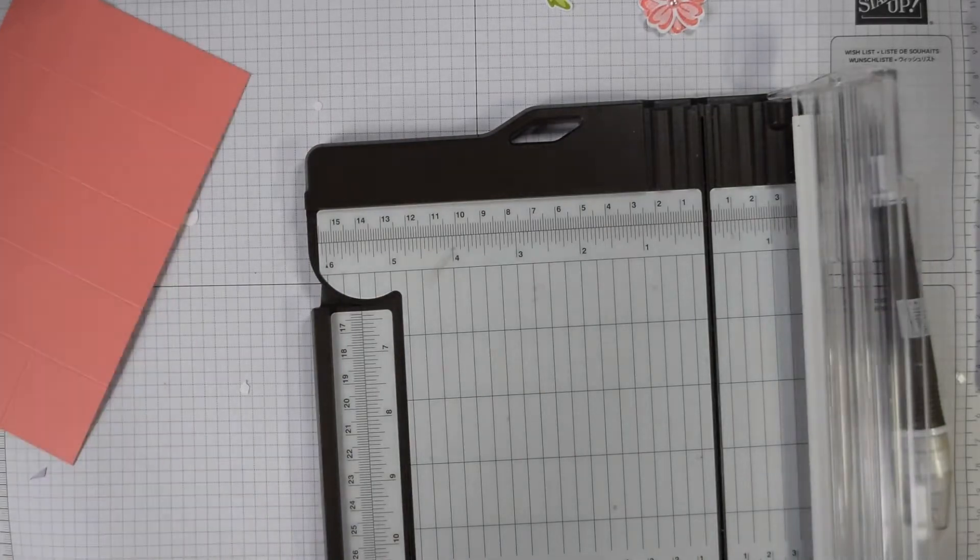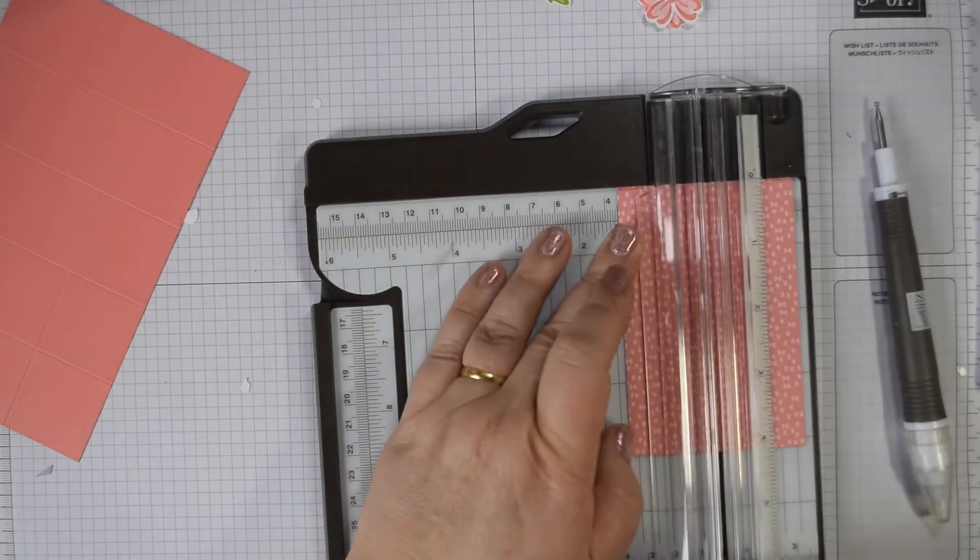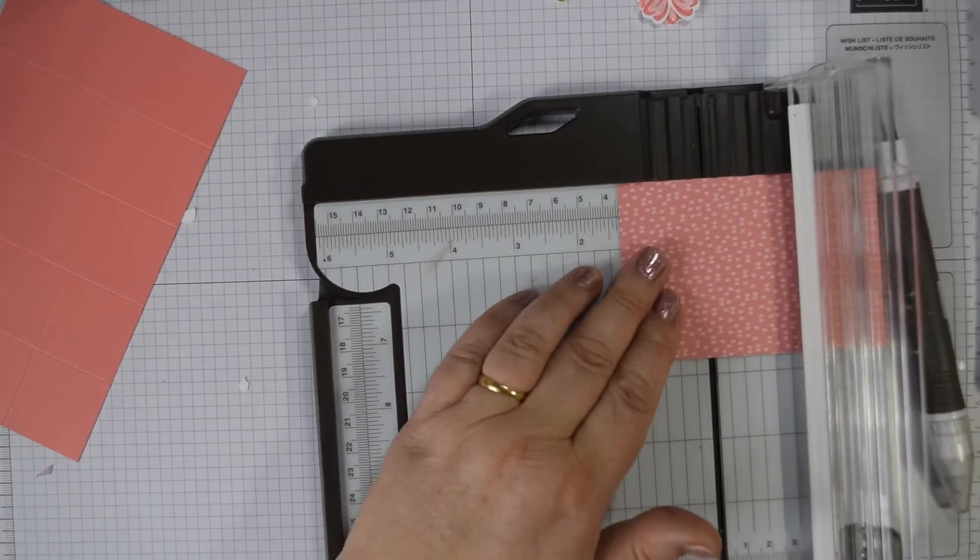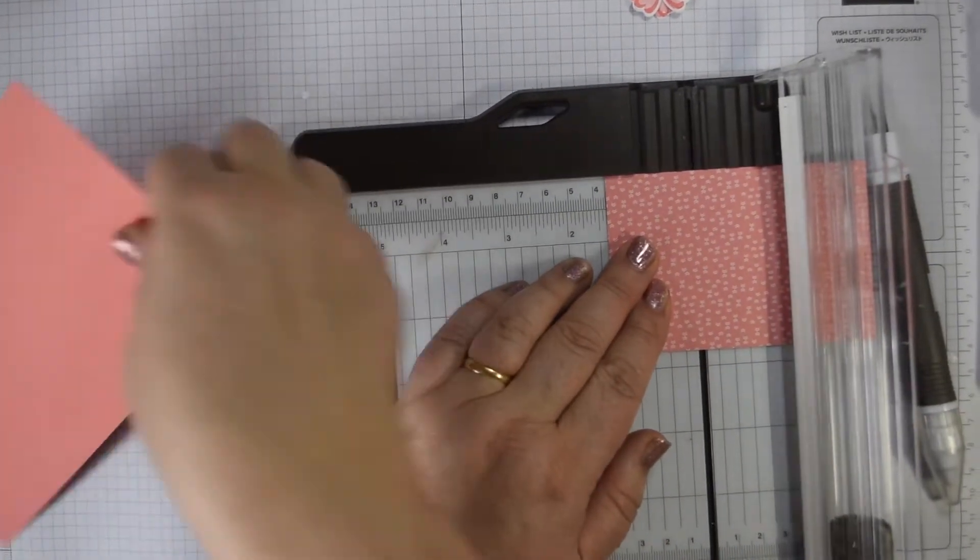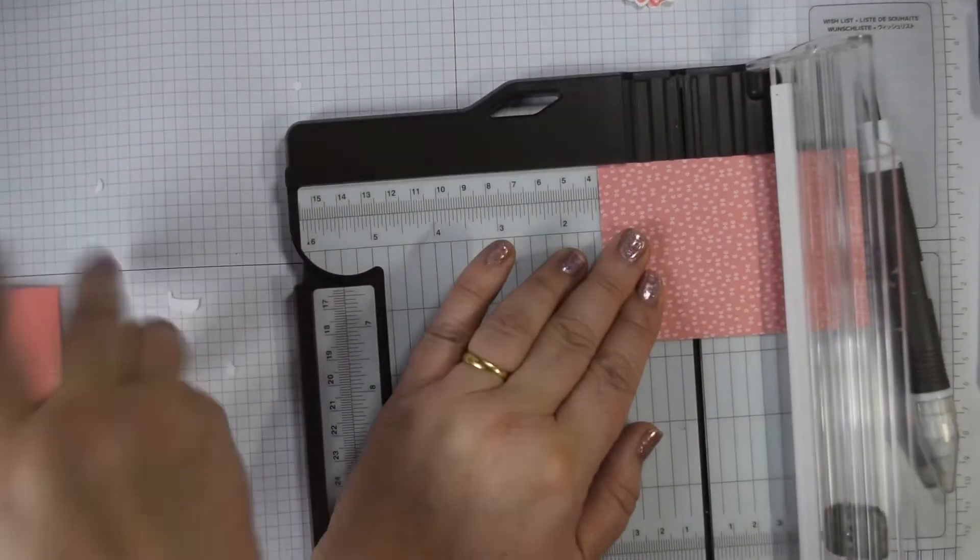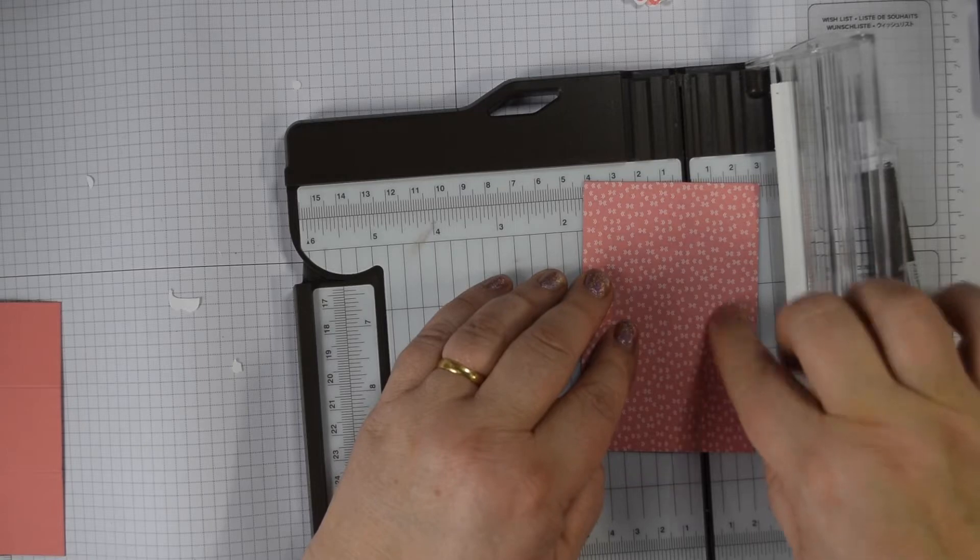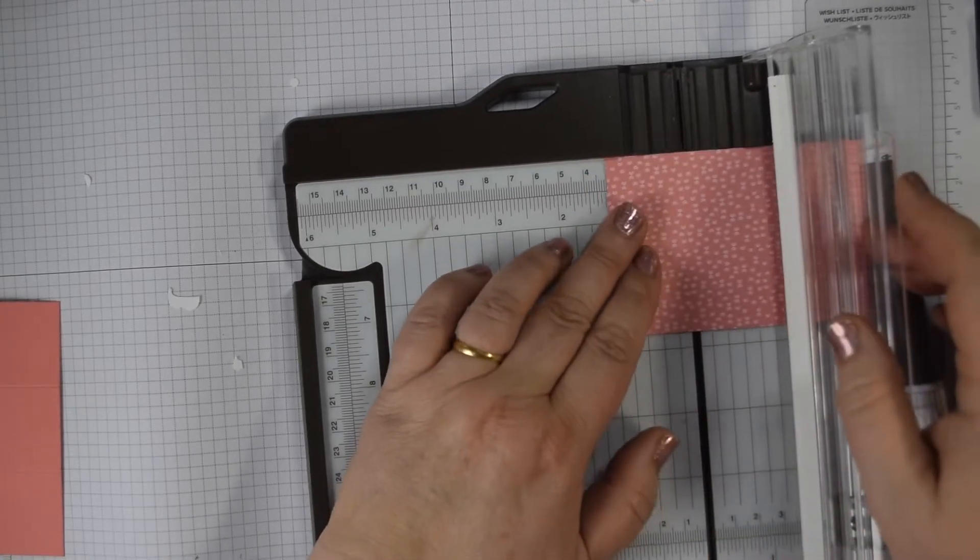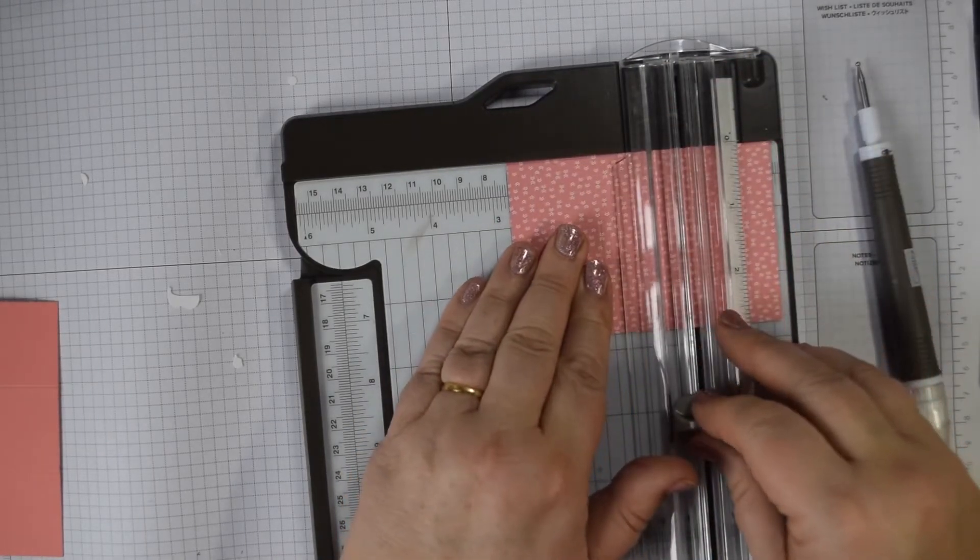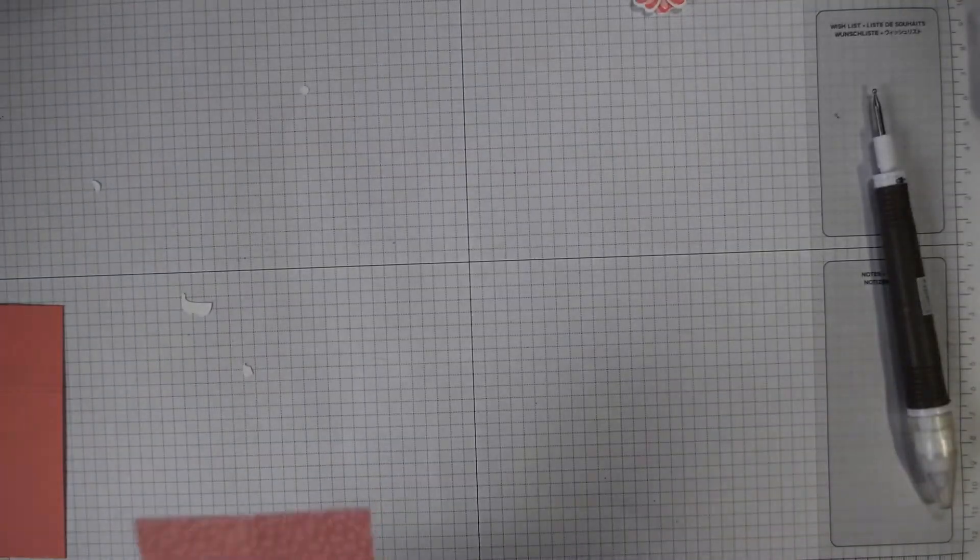Then you're going to score on the long edge at 3 1/2, at 7, at 10 1/2, and at 14. The DSP that you need is 10 1/2 by 7 centimetres. You're going to score that down the middle just gently. It's only DSP at 3 1/2, 1 3/8. On the long edge the measurements in inches are 1 3/8, 2 3/4, 4 1/8, and 5 1/2. On this one your size is 4 1/8 by 2 3/4. You're scoring at 1 3/8 and then on the long edge in centimetres it's 3 1/2 and 7. And so in inches that's 1 3/8 and 2 3/4.